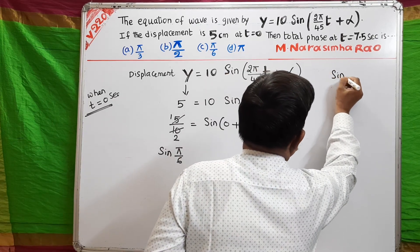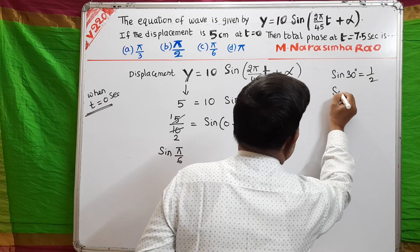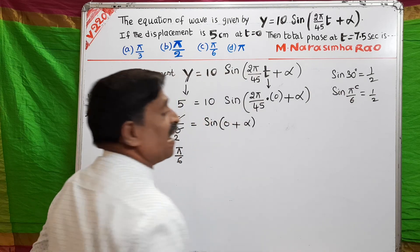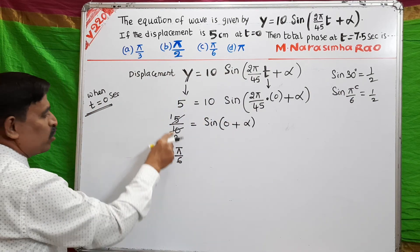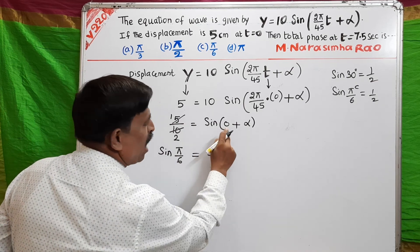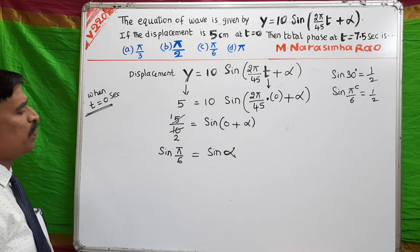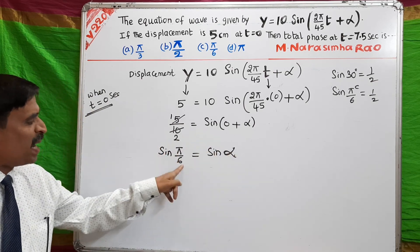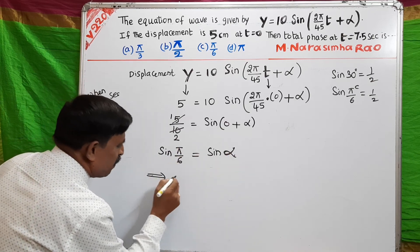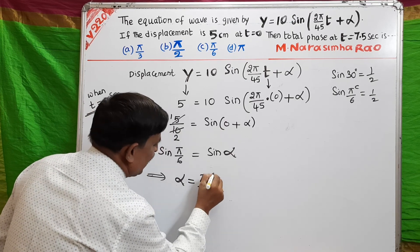Sine 30 degrees equals 1/2; otherwise sine π/6 equals 1/2 — it is in radians. So sine α = sine π/6, which implies alpha = π/6 radians.